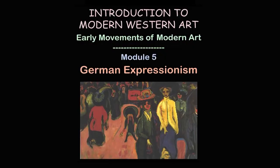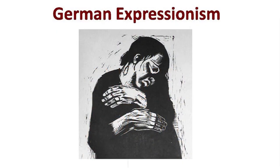Hi viewers, welcome to MOOC's online course on Introduction to Modern Western Art. Today we will be looking at another significant art movement that took place in the first half of the 20th century, and it is known as German Expressionism. The name suggests that the movement started from Germany, basically in cities like Munich, Dresden, and also later in Berlin.